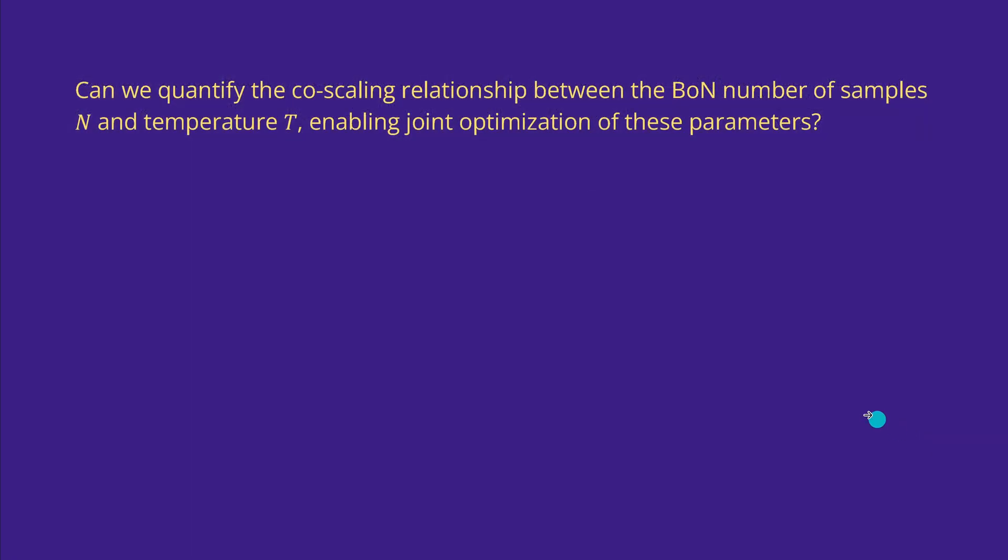There was also one question that was really interesting for Google. They say, do we have a co-scaling relationship between the number of samples of our inference policy and a particular temperature of our LLM? Thereby enabling us to have a joint optimization process of both parameters.